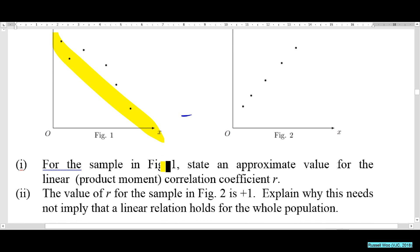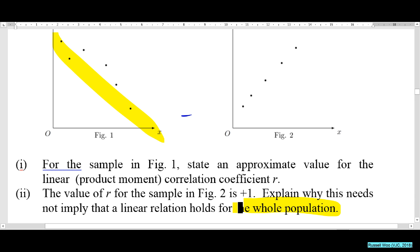Part 2 is a bit tricky. If r = 1, the points lie perfectly on a straight line. But explain why this need not imply that the linear relationship holds for the entire population — keyword: entire population.